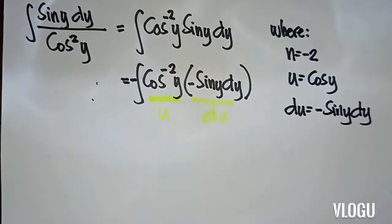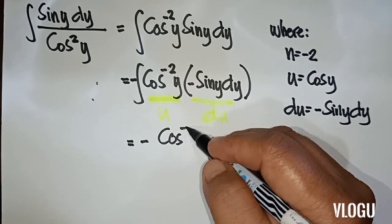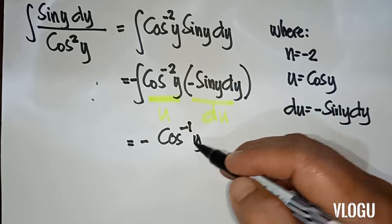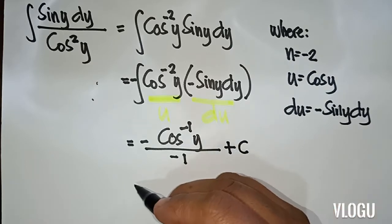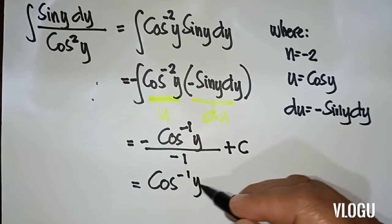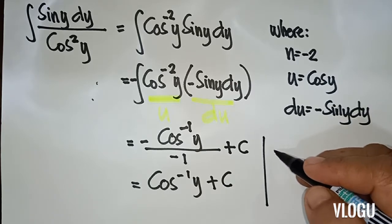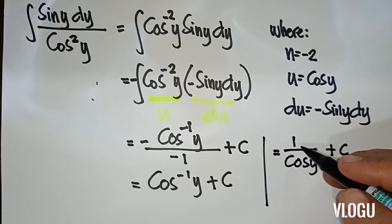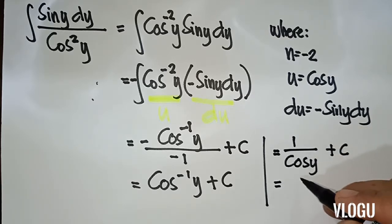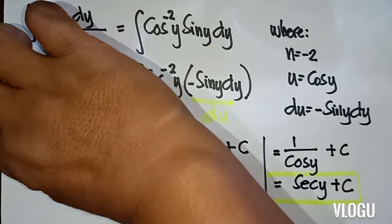Proceeding with the formula, we get negative cosy to the negative 1 over negative 1 plus C. Negative over negative gives positive, so we have cosy to the negative 1 plus C, which equals 1 over cosy plus C. Bringing the negative 1 exponent down gives 1 over cosy, which equals secy plus C. That is the final answer.